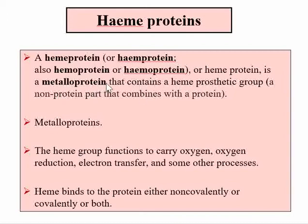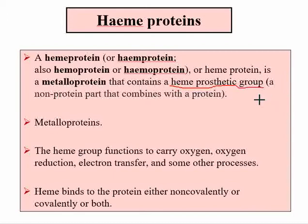A heme protein is a metalloprotein that contains a heme prosthetic group. The heme prosthetic group is the non-protein part of the protein — it is the heme component that combines with the protein part to form the heme protein. So heme is the prosthetic group, and this prosthetic group together with the protein is called a heme protein.